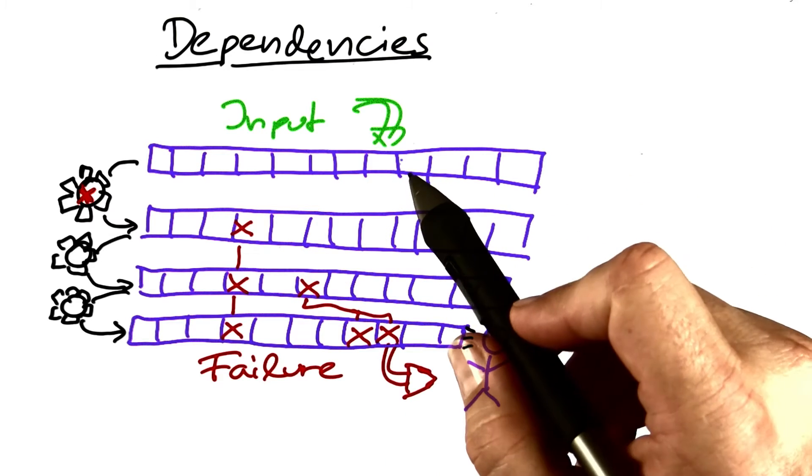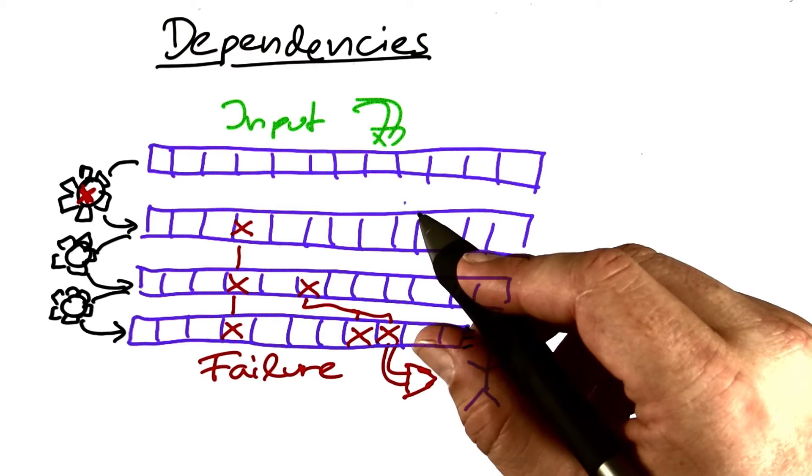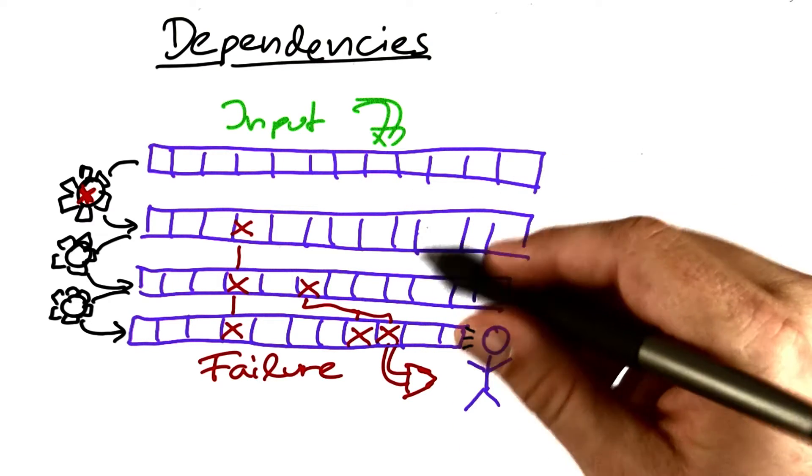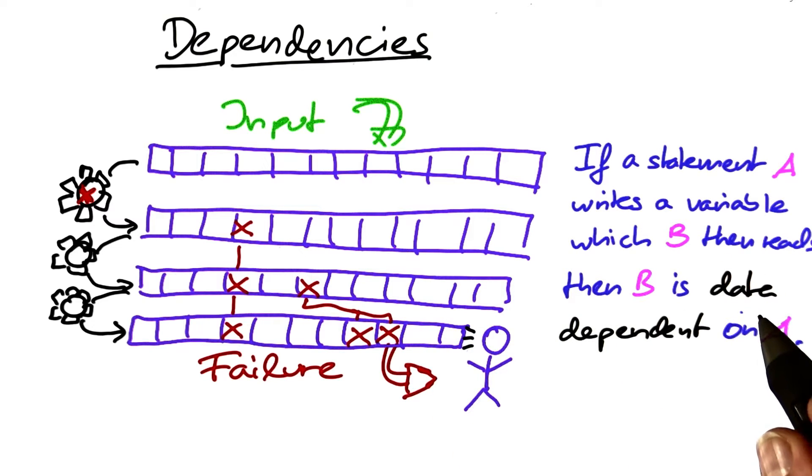This reasoning, this backwards reasoning, is actually structured along the ways that earlier events in the program could have influenced later events. The most important concept when reasoning backwards is called data dependency.